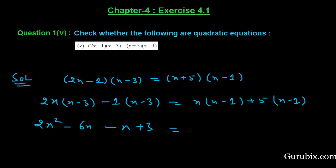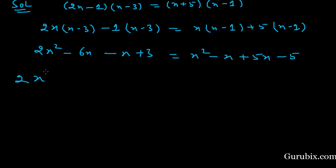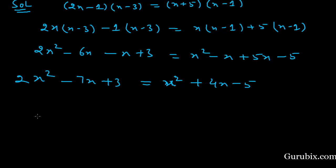On the right-hand side we have x² - x + 5x - 5. Simplifying both sides: the left-hand side becomes 2x² - 7x + 3, and the right-hand side becomes x² + 4x - 5.